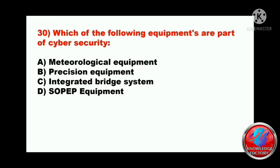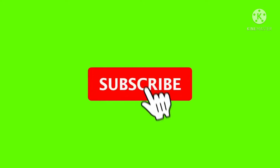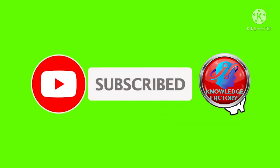Question thirty: which of the following equipment are part of cyber security? A) meteorological equipment, B) precision equipment, C) integrated bridge system, or D) soapy equipment. The answer will be C - integrated bridge system. So guys, these are some questions for your SD Security course and I wish you very very good luck for your exam. Please share the video, subscribe to my channel, and see you in the next video. Till then, goodbye, take care, thank you.